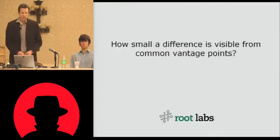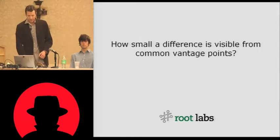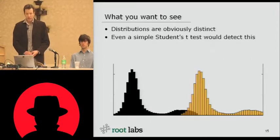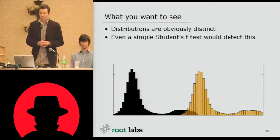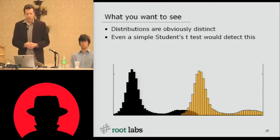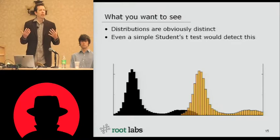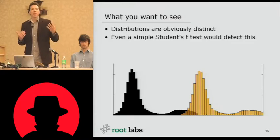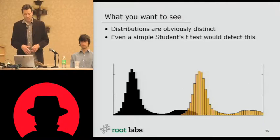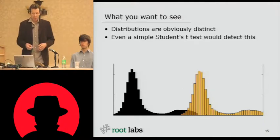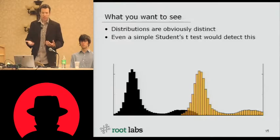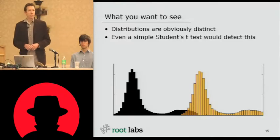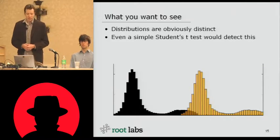First question: how small a difference is visible from common vantage points? So this is just a mocked-up version, but this is what you want to see. You want to see two distributions that are obviously distinct. So let's say we're comparing a password guess of A versus a password guess of B, and the correct answer is B. The correct answer B is in the yellow here. This is easily predictable — the two distributions are very distinct, with very little overlap between them. Even a simple hypothesis test based on difference of means would detect this kind of difference.